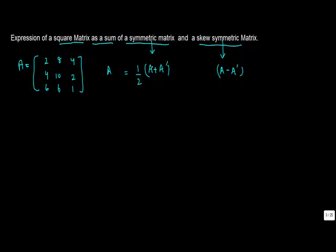Theorem 2 basically says that a square matrix A can also be written as one-half of a symmetric matrix plus one-half of a skew-symmetric matrix. This is because A plus transpose of A is a symmetric matrix, and A minus A-transpose is a skew-symmetric matrix. So A equals half of (A plus A-transpose) plus half of (A minus A-transpose).